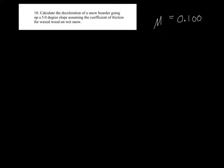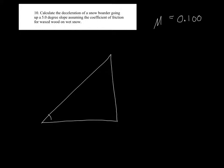I have this snowboarder going up a slope, so I'm going to draw a nice big picture so we can actually see all of this. Here's my slope — it's going to be 5 degrees. Here's my snowboarder, represented as a box, because physicists love boxes. He's going to be moving up this slope and decelerating as he moves.